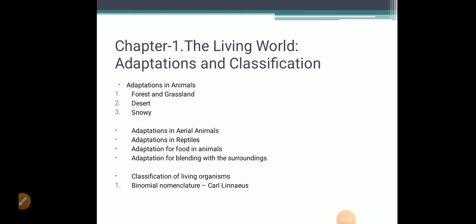Now we shall study adaptations in animals, forest and grassland animals, desert animals, snowy animals, adaptations in aerial animals, adaptations in reptiles, adaptations for food in animals, adaptations for blending with the surroundings, classification of living organisms, and binomial nomenclature by Carl Linnaeus.